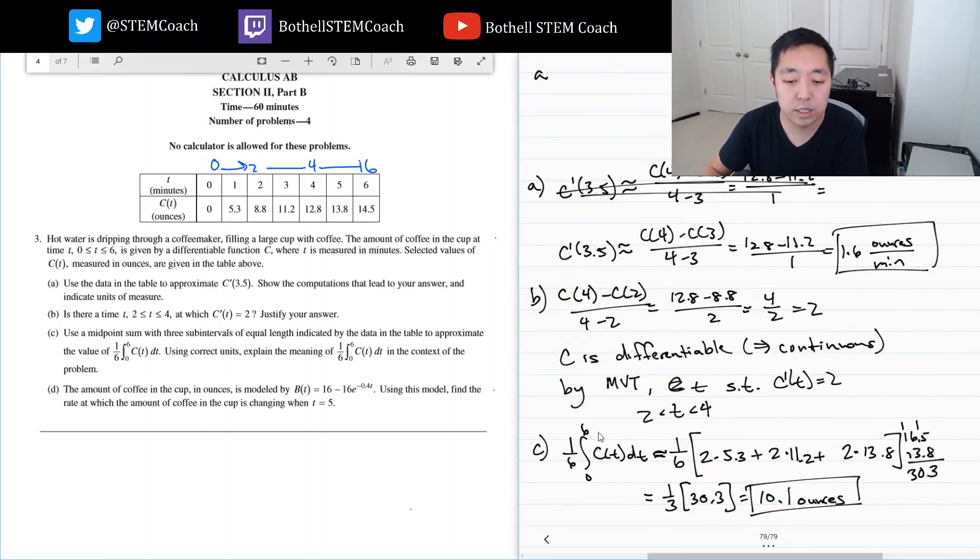The units of this are ounces. The reason is this integral would be ounce-minutes, and then we're dividing by six, which is the width of the whole interval, six minutes. So this is an average value.